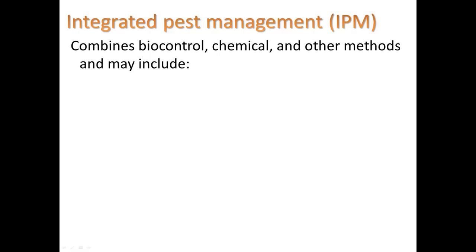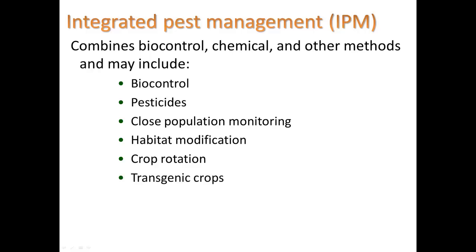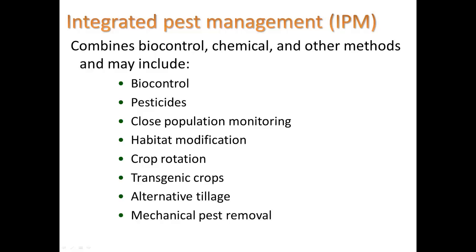This leads us to integrated pest management, or IPM, which combines biocontrol, chemical, and other methods. It may include using biocontrol; using pesticides in smaller doses; doing close population monitoring so you're only applying what you need; habitat modification — for example, eliminating standing water that serves as a breeding ground for pests; crop rotation, where you take a year off on a certain crop so the insects that rely on it die off; using transgenic crops that may contain the BT toxin; alternative tillage such as no-till farming; and mechanical pest removal such as sticky tape.